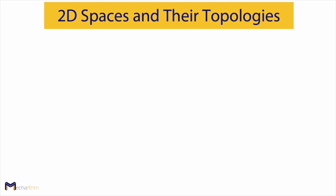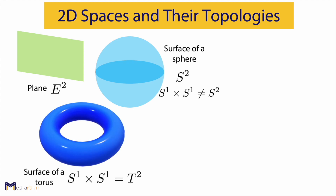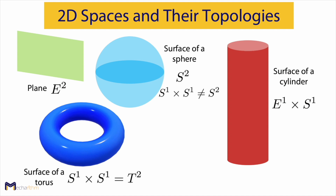Now let's see some 2D spaces. A plane is a two-dimensional space with the topology of E2, which is a 2D flat Euclidean space. The surface of a sphere is also a 2D space, and its topology is called S2. Note that the Cartesian product of two circles is not a surface of a sphere — it's a torus. A 2D surface of a torus is the Cartesian product of two circles, and it's called T2. A 2D surface of a cylinder is the Cartesian product of a one-dimensional Euclidean space and a circle. These are all two-dimensional spaces but with different topologies, so C-spaces of the same dimension can have different topologies.